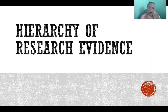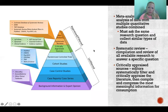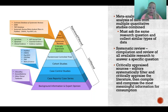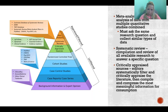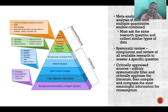Hello, in this video I'm going to talk about the hierarchy of research evidence. This is a great visual way to understand what sources of evidence or types of research are the best and which are not the best. As we move up towards the peak of our pyramid, those are the best sources of evidence, and not so good as we move down. I'll briefly talk about what each of these are.